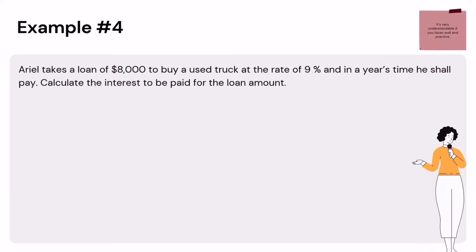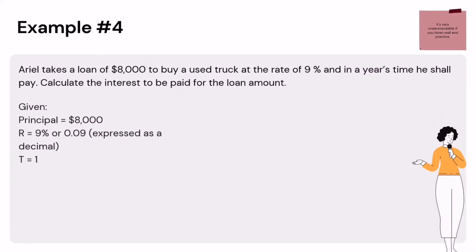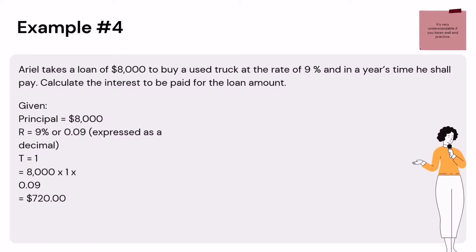Example 4: Ariel takes a loan of $8,000 to buy a used truck at a rate of 9% simple interest. Calculate the interest to be paid for the loan amount. Given: principal is $8,000, rate is 9% or 0.09 (expressed as a decimal), time is 1 year. Using SI = P × T × R: 8,000 × 1 × 0.09 = $720. Therefore, the annual interest to be paid is $720.